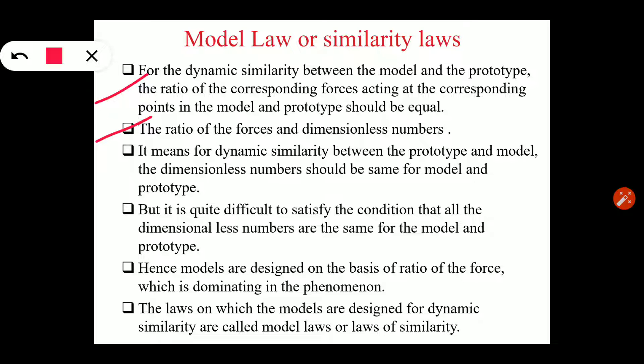But it is quite difficult to satisfy the condition that all the dimensionless numbers are the same for the model and prototype. इसका मतलब यह है कि suppose हमने ratio of inertia force of prototype and model लिया, same way gravity force, surface tension सबका ratio लिया, तो हर problem के अंदर यह possibility बहुत कम है कि सारे ratios same हों। तो उस case में जो भी एक process है उसके अंदर जो dominant force है, at least उनका ratio same आना जरूरी है। उस basis पे हम define करेंगे कि कौनसे process के अंदर कौनसे forces dominant हैं और कौनसा model law use करना है।